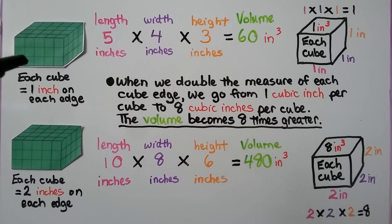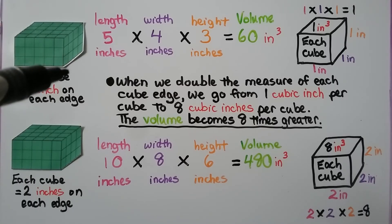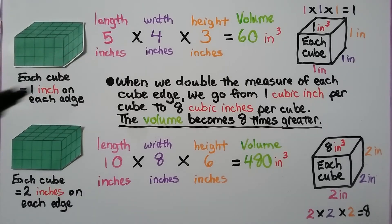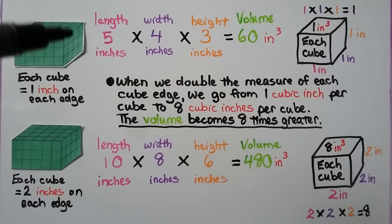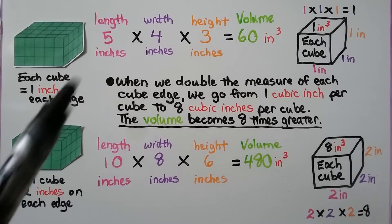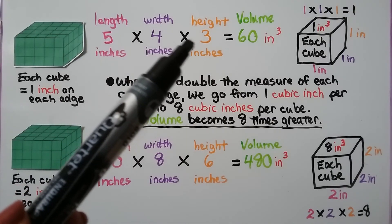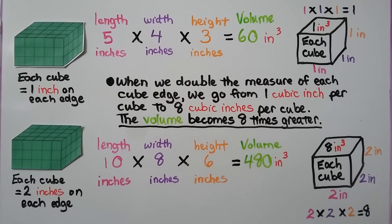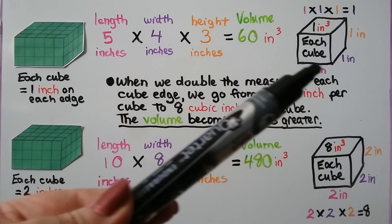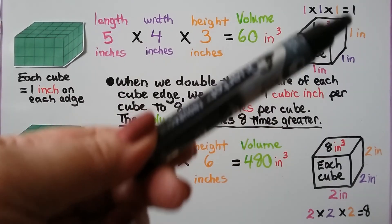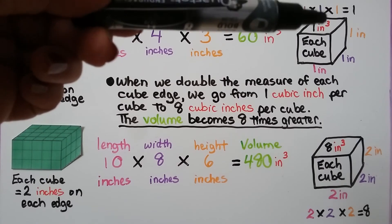For this rectangular prism, each cube is equal to 1 inch on each edge. We count 1, 2, 3, 4, 5 for the length — that's 5 inches. We count 1, 2, 3, 4 for the width — that's 4 inches. We count 1, 2, 3 for the height — that's 3 inches. We multiply 5 times 4, which is 20, then 20 times 3 is 60. So its volume is 60 inches cubed, because each cube is 1 inch cubed.